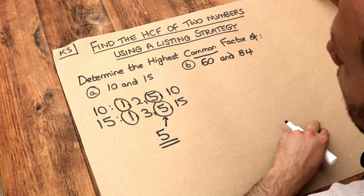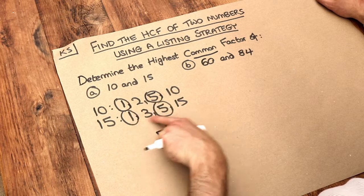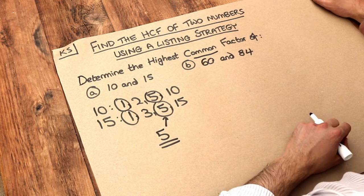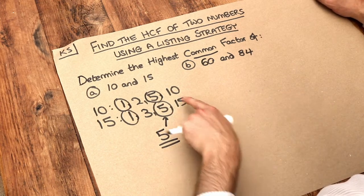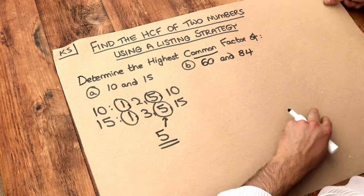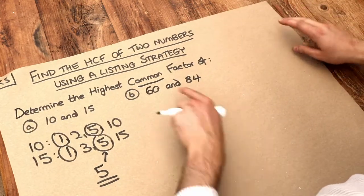So the strategy here is just to list the factors of both numbers and then just find the highest number which is common to both of those lists of factors. So let's do that for this second question here. We want the factors of 60.